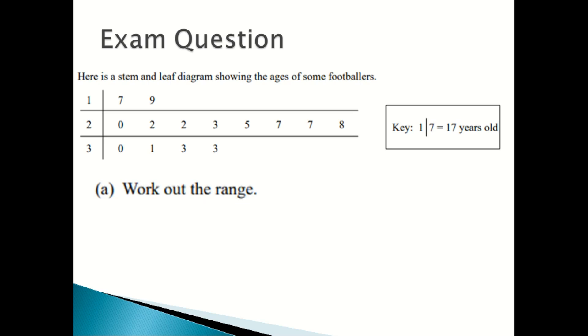A, work out the range, and B, work out the median age. Sometimes with a stem and leaf diagram, you have to use the information in a ready-made stem and leaf diagram to find out the range, find out the median age, or find the mode age.